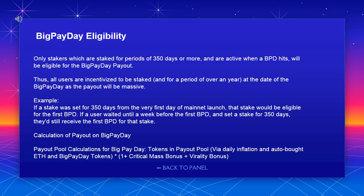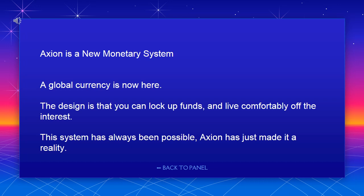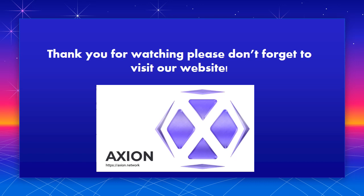Calculation of payout on Big Pay Day: the payout pool calculations for Big Pay Day include tokens in the payout pool via daily inflation and auto-bought ETH, plus Big Pay Day tokens multiplied by (1 plus critical mass bonus plus virality bonus). Axion is a new monetary system — a global currency is now here. The design is that you can lock up funds and live comfortably off the interest. This system has always been possible; Axion has just made it a reality. Thank you for watching — please don't forget to visit our website.